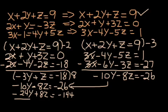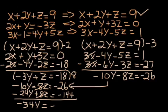And I'm ready to put these together again. Negative 10y, negative 24y is negative 34y. The z's cancel. That's good. And then I've got to put together negative 26 and negative 144. And I believe that will give me negative 170.